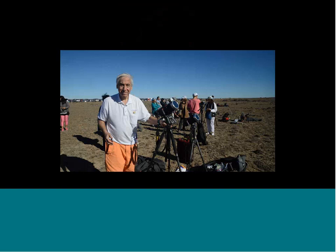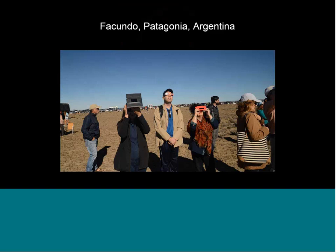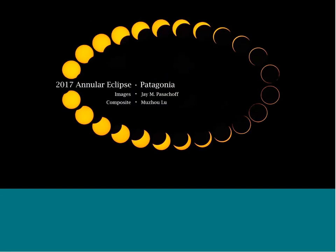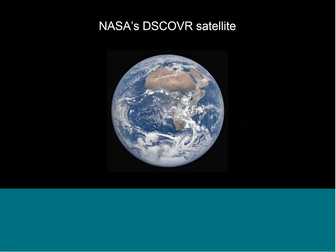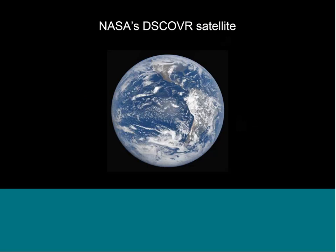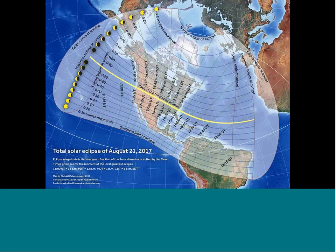Here I am in the field with some of the cameras that took those images. People near me are looking up — the woman on the right has a card with filter material, the man in the middle has the same material put into glasses, and the person on the left has the card mounted in bigger cards to keep more sunlight off her face. There will be a lot of those glasses around. And you can also use a pinhole camera — just punch a hole in a piece of paper and let the sun project through it. During an eclipse you see crescent-shaped images rather than round ones. NASA's DISCOVER satellite also shows the shadow of the moon crossing the Earth as a real dark shadow on the surface.